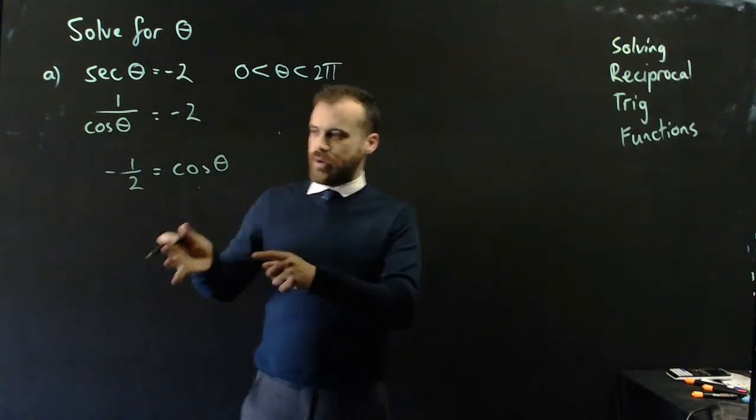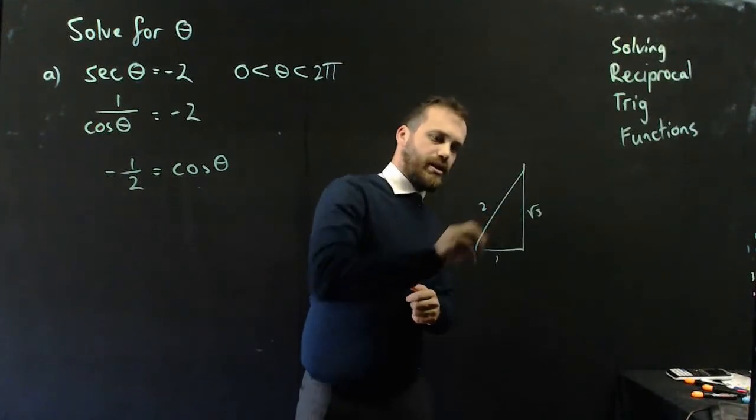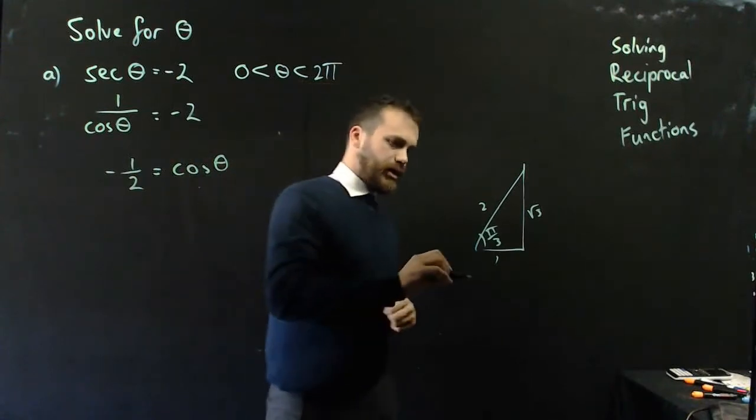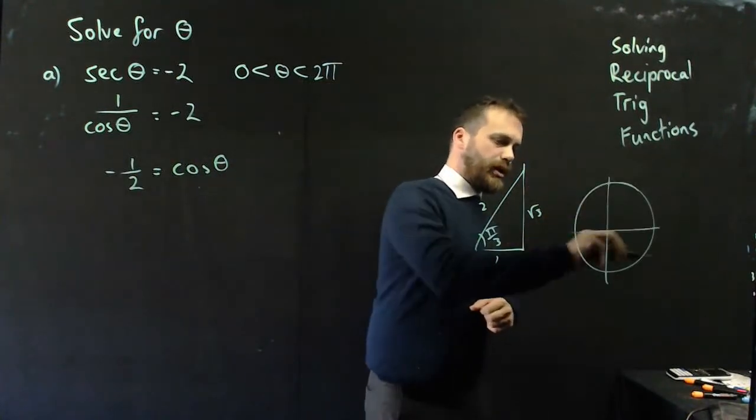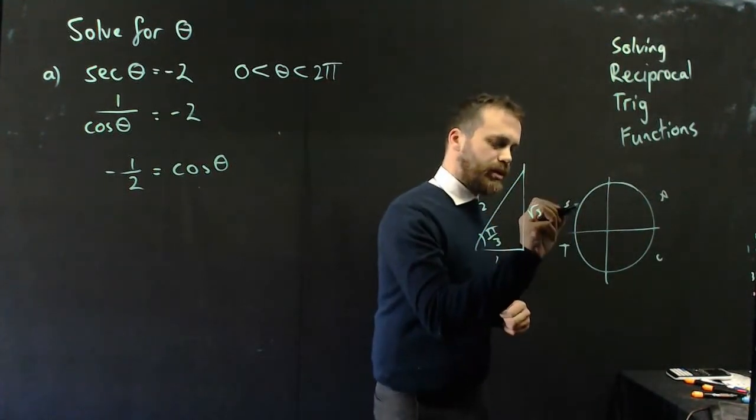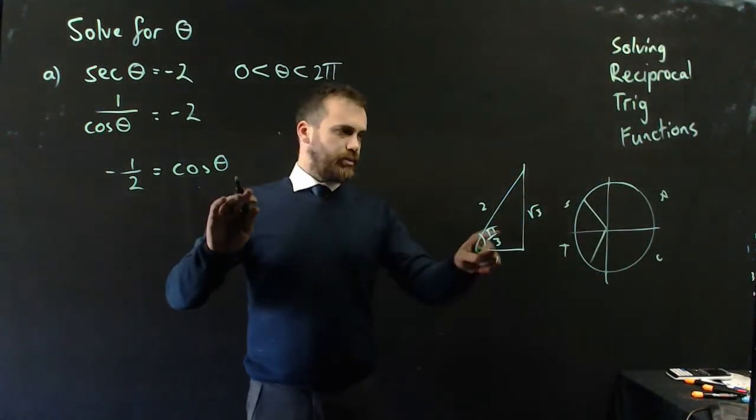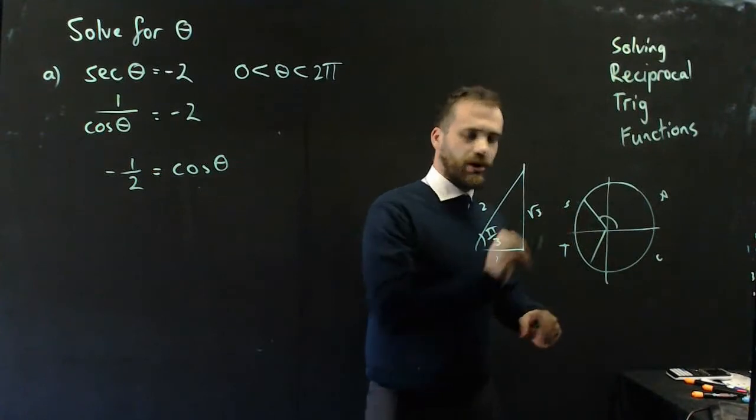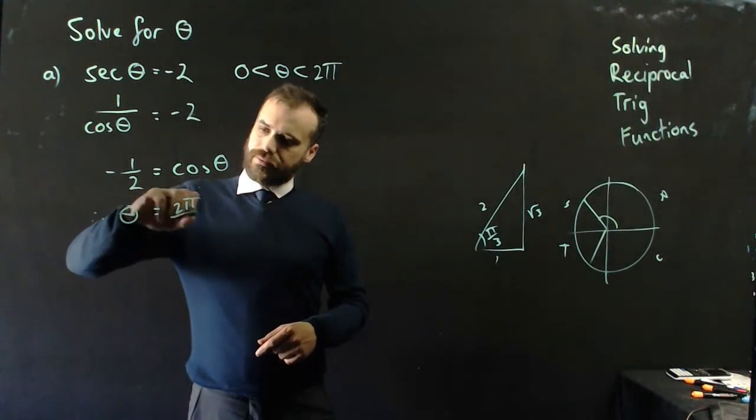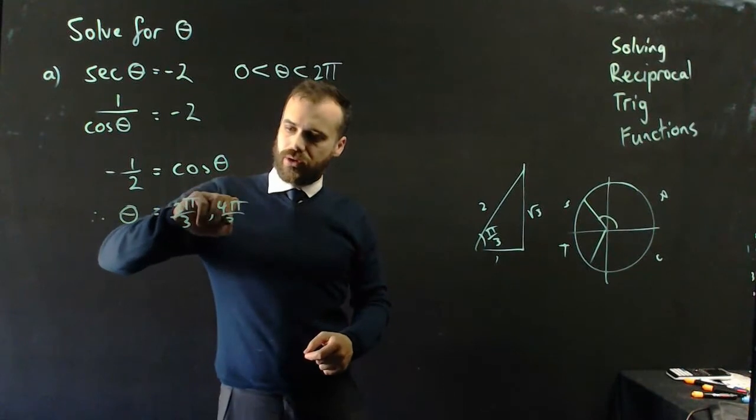And we solve that the same way that we always do. We give ourselves a little standard triangle here. That's going to be pi on 3. We look at our unit circle and understand that because the answer is negative, it must be in this quadrant or this quadrant. And pi on 3, so it's going to be 2 pi on 3 as one of our answers. And the next answer is going to be 4 pi on 3.